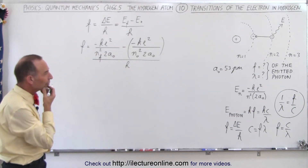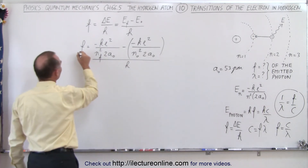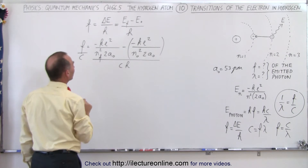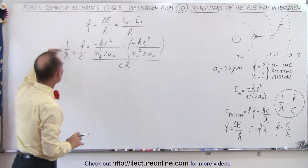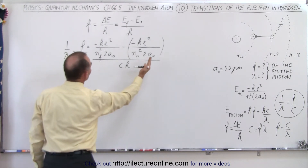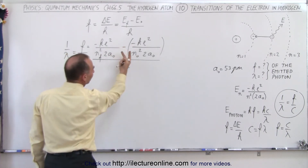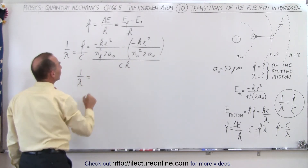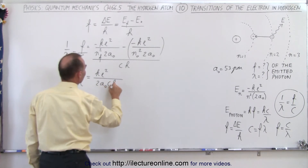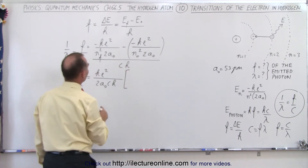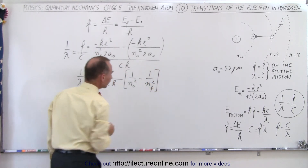Notice that if frequency is divided by the speed of light c, it can be written as 1 over lambda. So we divide both sides by c, giving us 1 over the wavelength. We then factor out what is common — everything besides n final and n initial — and notice that the two negatives cancel, so we can reverse the order and write: 1 over lambda equals k e squared divided by 2a sub nought times c times h, multiplied by the quantity 1 over n initial squared minus 1 over n final squared.